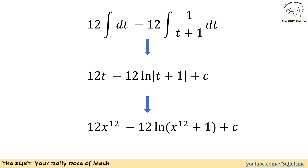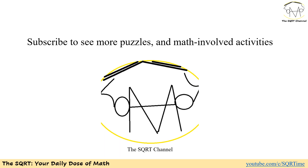Now I need to substitute back x to the power of 1 over 12 for t. The result is 12 times x to the power of 1 over 12 minus 12 times ln of x to the power of 1 over 12 plus 1, plus c. Note that x to the power of 1 over 12 plus 1 is always positive, so the absolute value can be removed. That is our final answer. Thanks for watching the video.